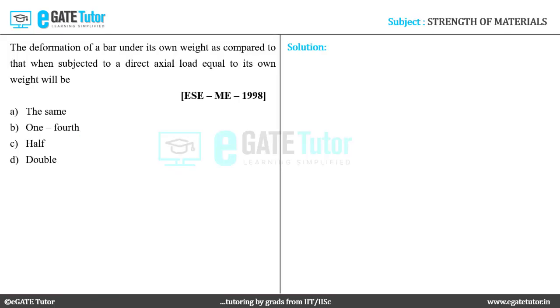This question is from Engineering Services Examination 1998. The deformation of a bar under its own weight as compared to that when subjected to a direct axial load equal to its own weight will be. This involves the concept of elongation of bars due to their own weight, so let's proceed to the solution.